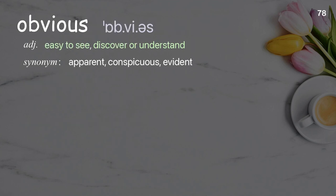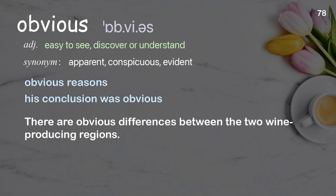Obvious: easy to see, discover, or understand. Examples: obvious reasons, his conclusion was obvious. There are obvious differences between the two wine-producing regions.